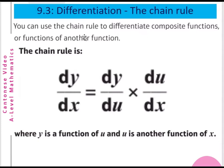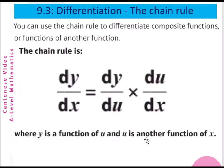You can use the chain rule to differentiate a composite function, or functions of another function. This is the chain rule: dy/dx is equal to dy/du multiplied by du/dx, where y is a function of u and u is another function of x.